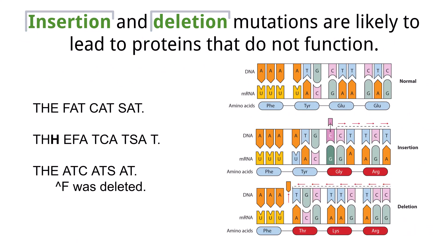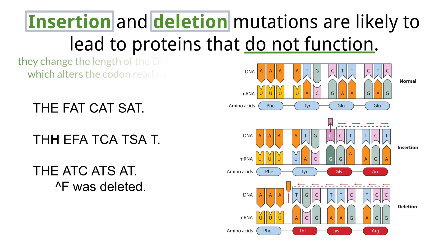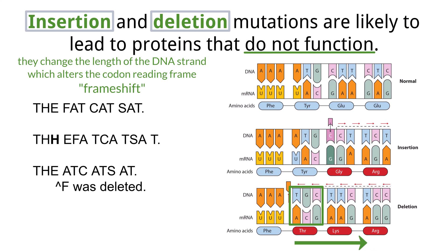Insertion and deletion mutations are more dramatic and are more likely to lead to a protein that does not function. They differ from substitutions because instead of replacing a nucleotide with a new one, they simply delete or insert different numbers of nucleotides into the sequence, which changes the length of the DNA strand. This can cause what's called a frame shift, changing the entire reading frame of the gene. Frame shift mutations occur when the number of bases inserted or deleted is not a multiple of three. Since codons are read in triplets, this shifts the entire reading frame downstream of the mutation, and every codon — and therefore every amino acid — after the mutation can change.